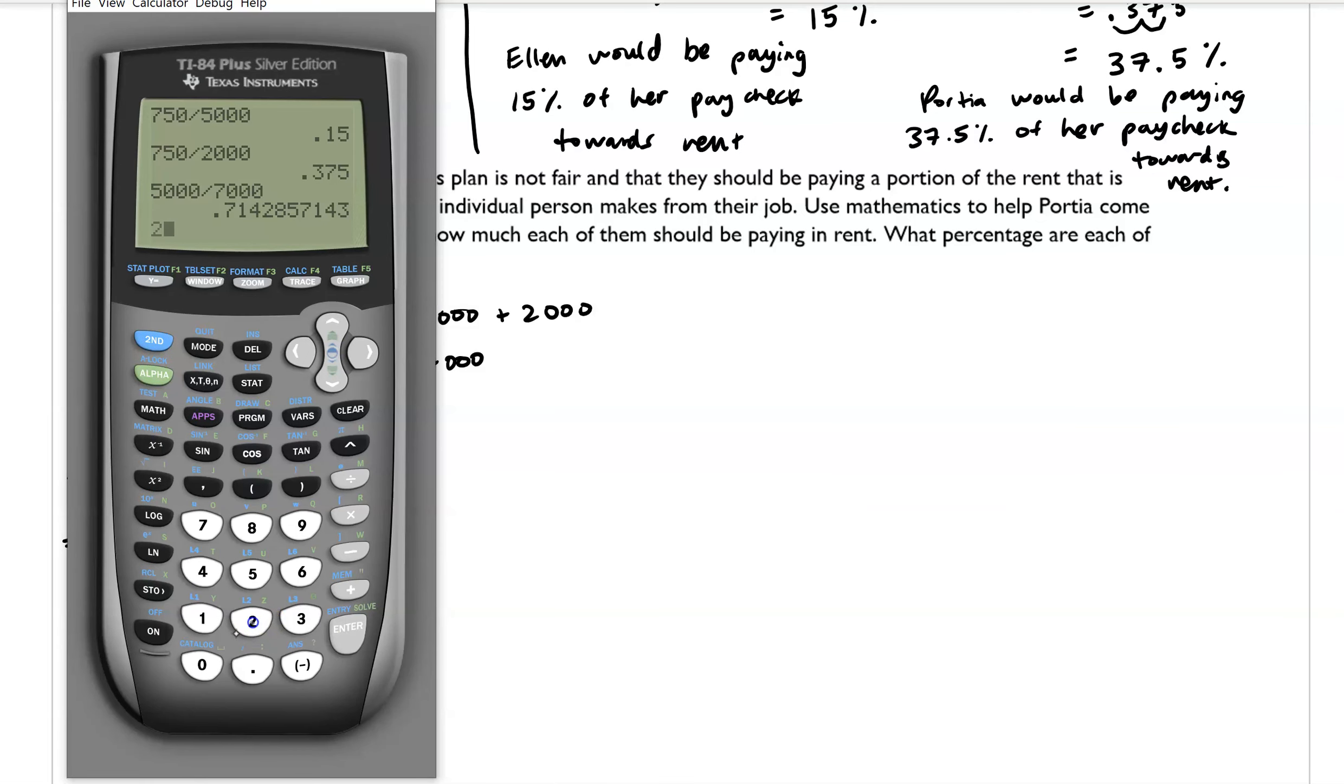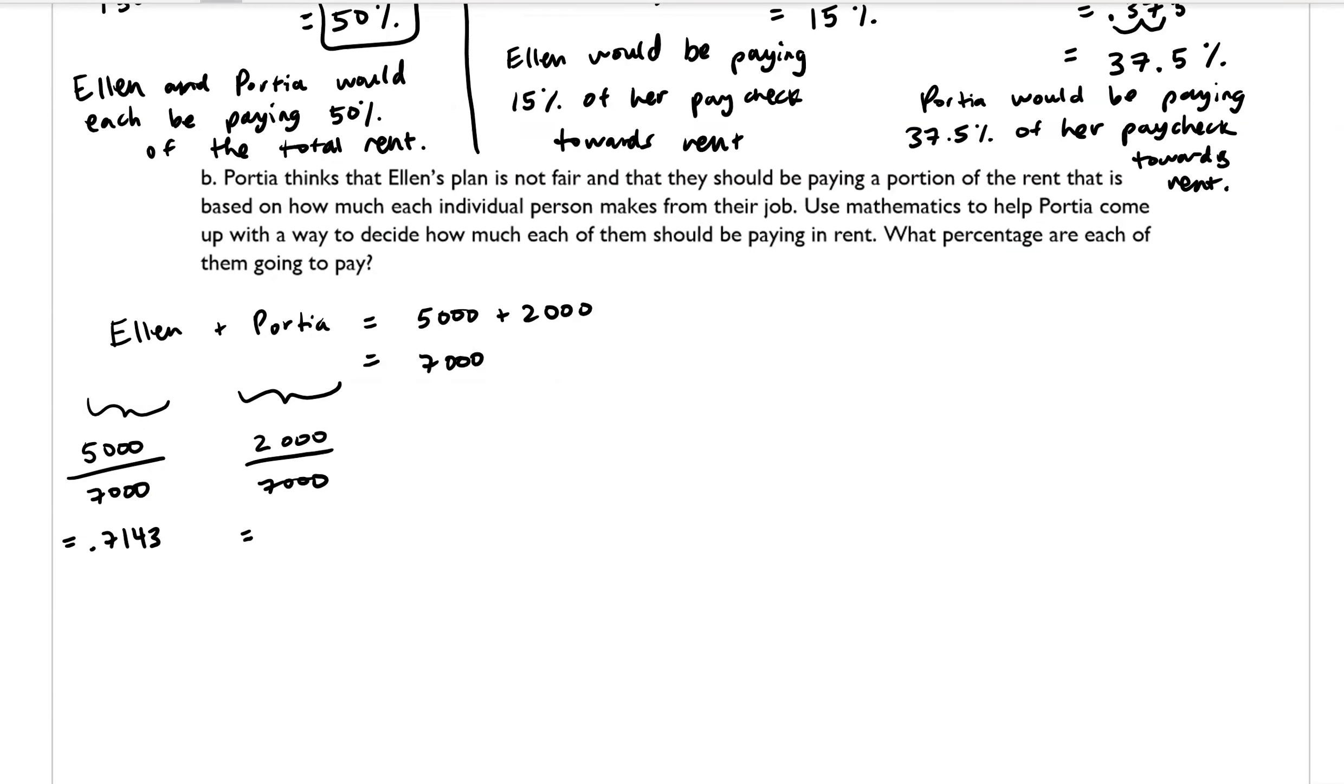So we have $5,000 divided by $7,000 is equal to 0.7143. And then $2,000 divided by $7,000 is 0.2857. And I want to convert both of those into percentages. So 71.43%, and then that's equal to 28.57%. So what this basically says now is that Portia is contributing 28.57% of the total monthly income, and Ellen is providing 71.43% of their total monthly income.